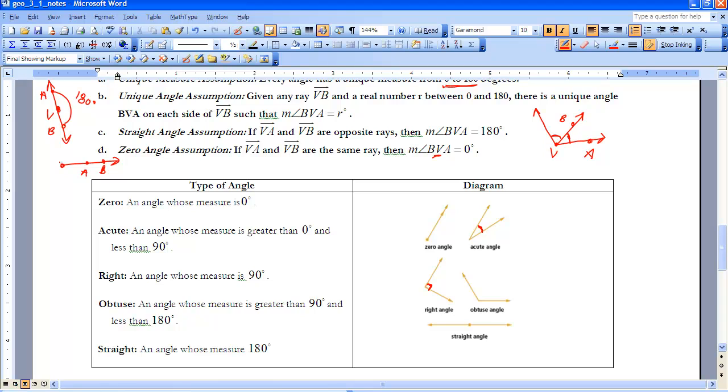And an obtuse angle is a measure greater than 90 and less than 180. And then a straight angle would be that straight line that we talked about up above in the angle measure postulate.